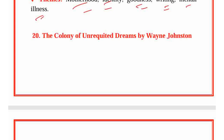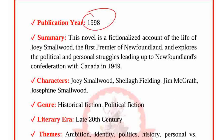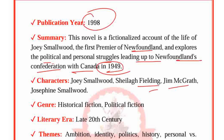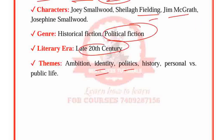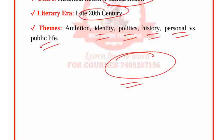The Colony of Unrequited Dreams by Wayne Johnston, published in 1998. The novel is a fictionalized account of the life of Joey Smallwood, the first premier of Newfoundland, exploring the political and personal struggles leading up to Newfoundland's confederation with Canada in 1949. Characters: Joey Smallwood, Sheilagh Fielding, Jim Magraths and Josephine Smallwood. Genre: Political fiction. Period: 20th century. Themes: Ambition, Identity, Politics, History and Personal versus public life. If you want to join us, you can contact our WhatsApp number. See you in the next video. Goodbye, take care.